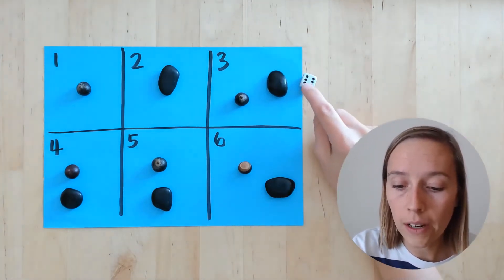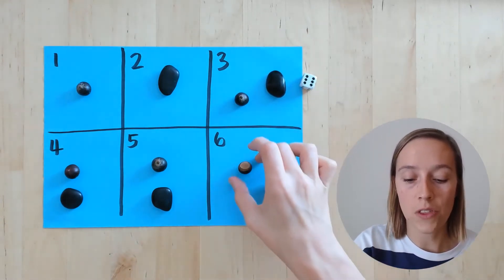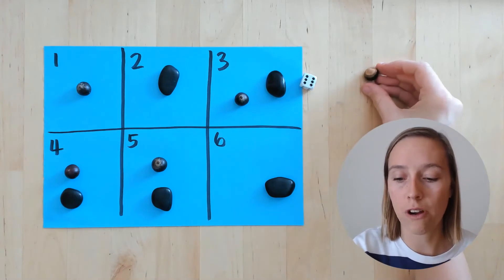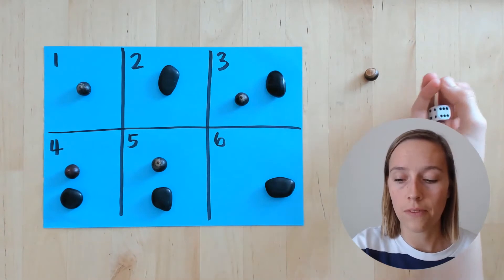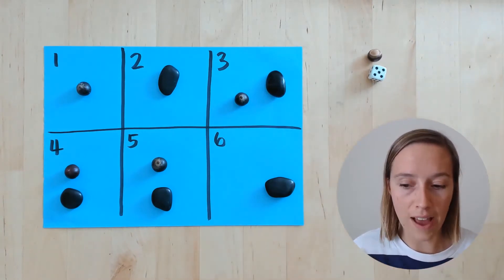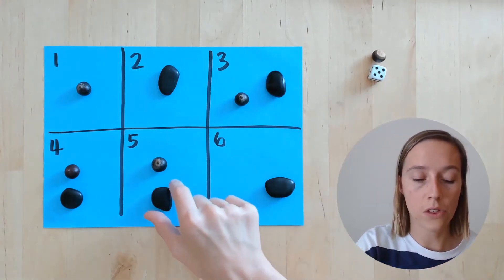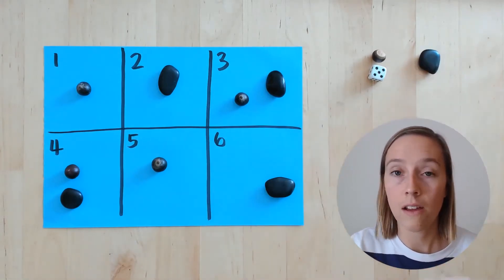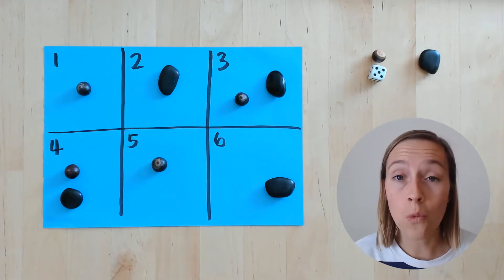Six, one, two, three, four, five, six dots. So the acorn person gets to take their counter off and they've cleared the board of one acorn. Now it's the rocks turn. Five, one, two, three, four, five. So the rock gets to take their rock off the board. You're going to keep playing like that until one of the players has cleared the board of all of their counters.